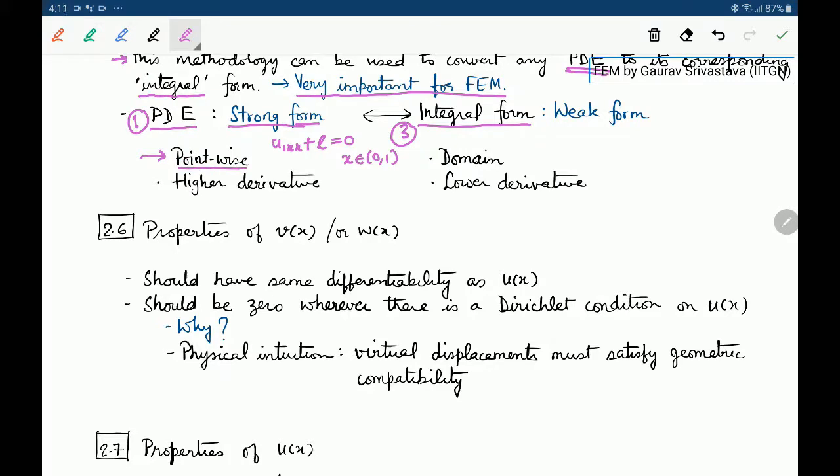Whereas the integral form we have these integrations: integral from 0 to 1 of u_x v_x dx equals integral 0 to 1 vl dx plus v(1)h. So this is a more diffused way of writing it. This is a domain-wise requirement. This is applied in an integral sense rather than a point by point sense. So that is one of the reasons why this is a weaker rendition of the same issue.